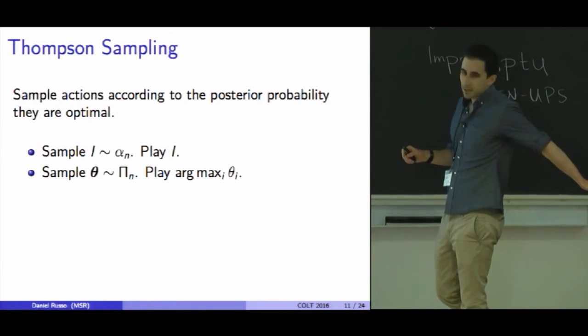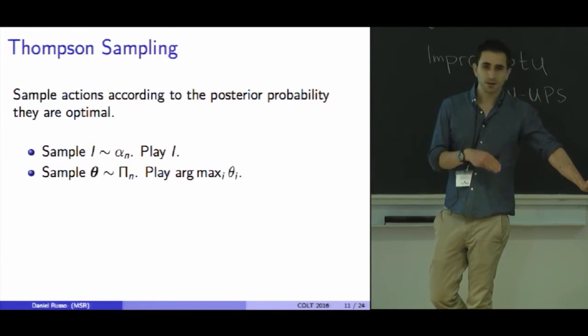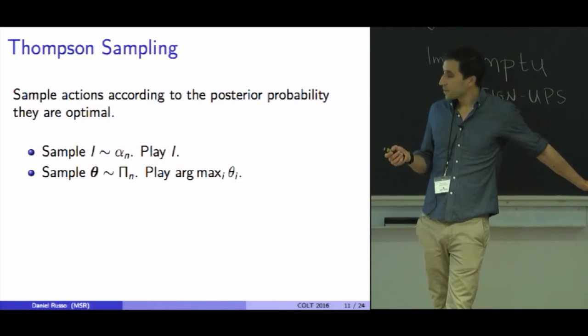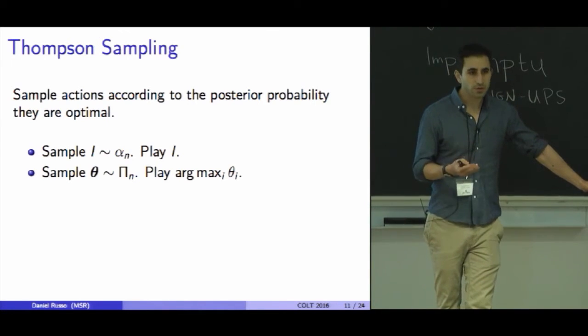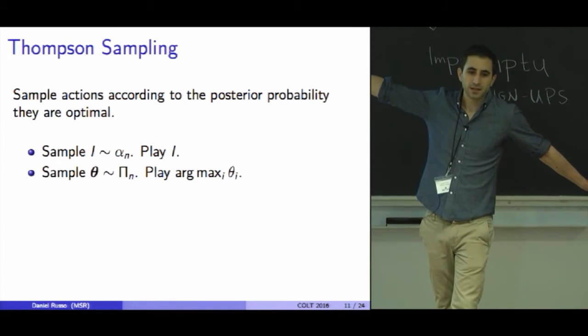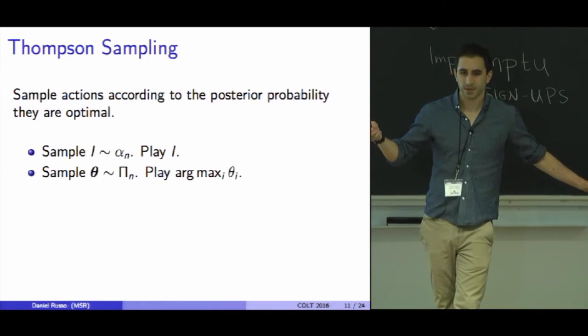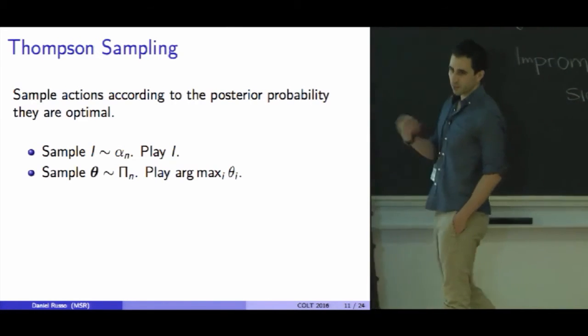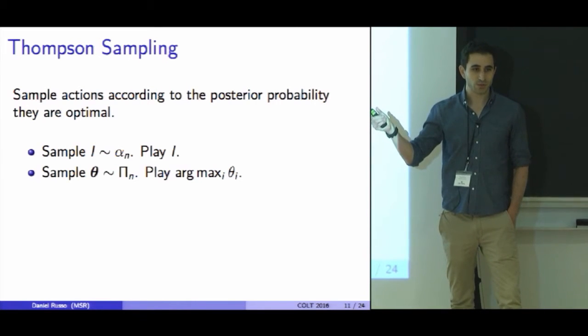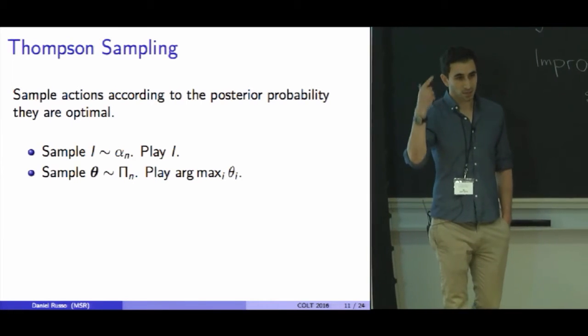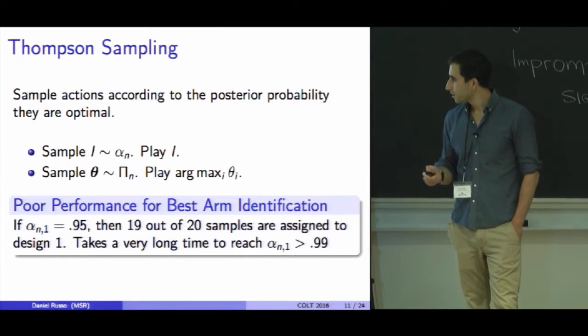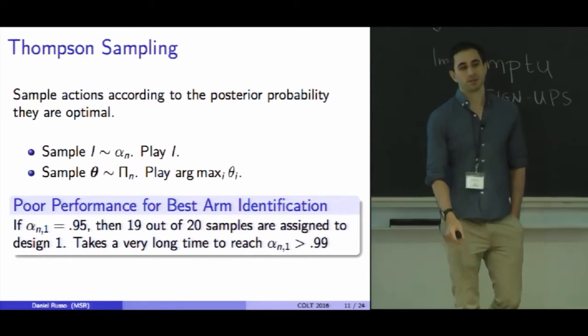Thompson sampling is a Bayesian algorithm for the multi-armed bandit problem that's gotten a lot of attention over the past several years, including from many people in the audience and myself. The basic idea is to sample actions according to the posterior probability that they're optimal. In particular, I play a sample from this distribution α_n, encoding the likelihood that each action is the best one. A completely equivalent definition, which is how people usually implement the algorithm, is that I draw a sample of this vector of qualities from the posterior distribution, and then I play whichever design had the highest quality under this sample. So I guess the truth, and I play according to the guess.